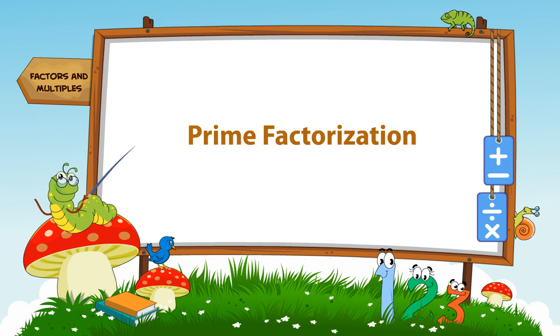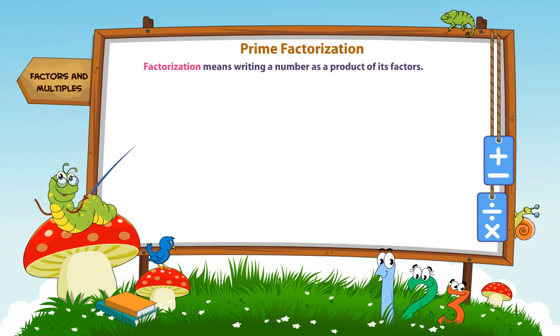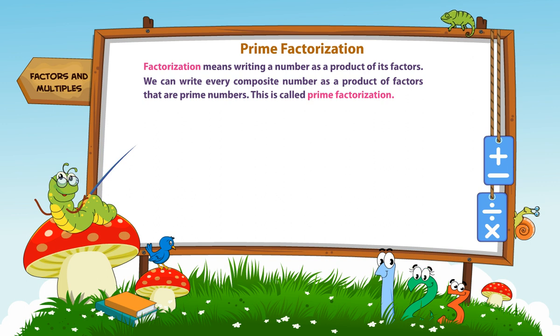Prime Factorization. Factorization means writing a number as a product of its factors. We can write every composite number as a product of factors that are prime numbers. This is called prime factorization.